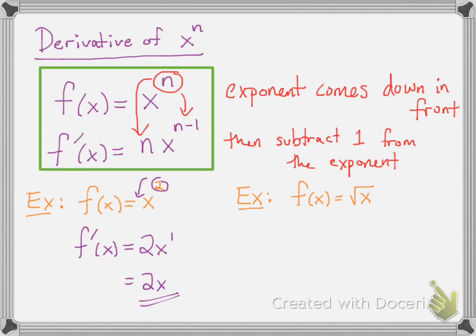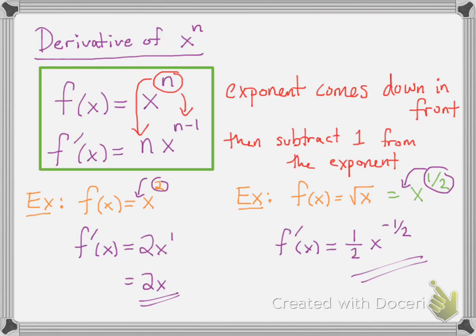The next example is square root of x. To take the derivative, you need to first rewrite it using algebra. Square root of x is the same thing as x to the one-half power. Now it's x to a power, so whatever that power is, it comes down out in front, and then you subtract 1 from the exponent. So it's going to be one-half times x to the negative one-half power.